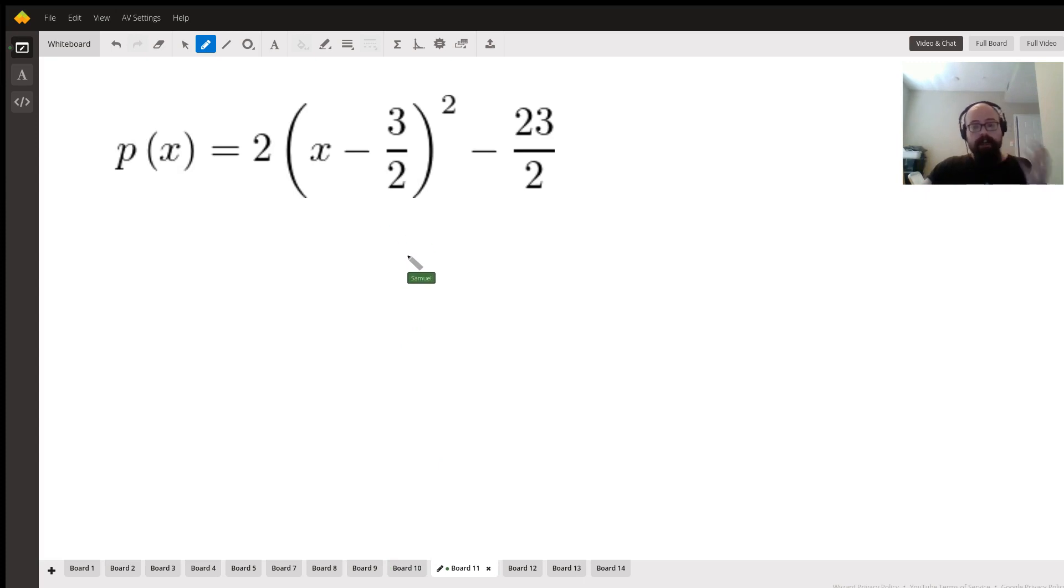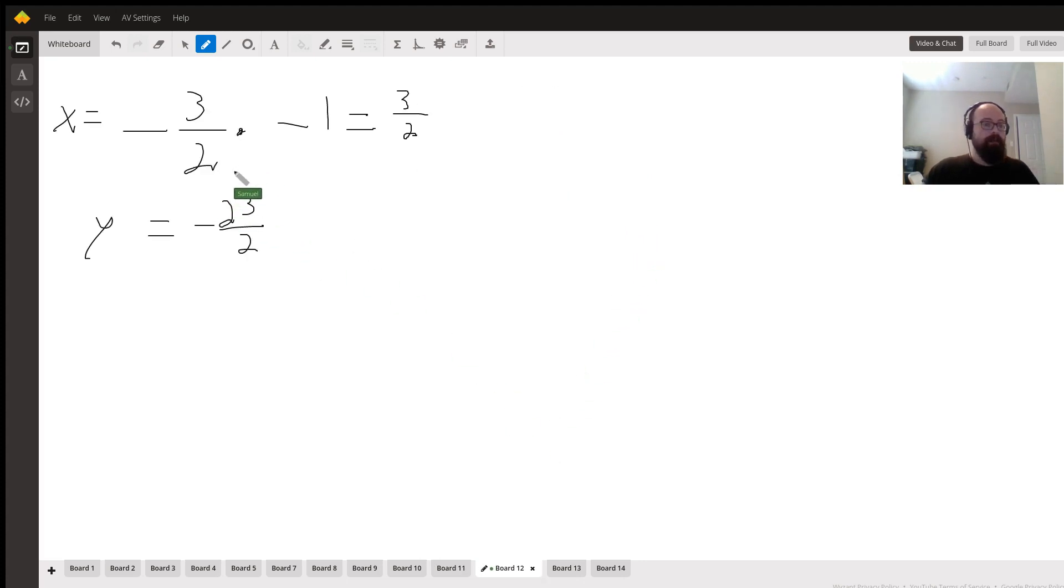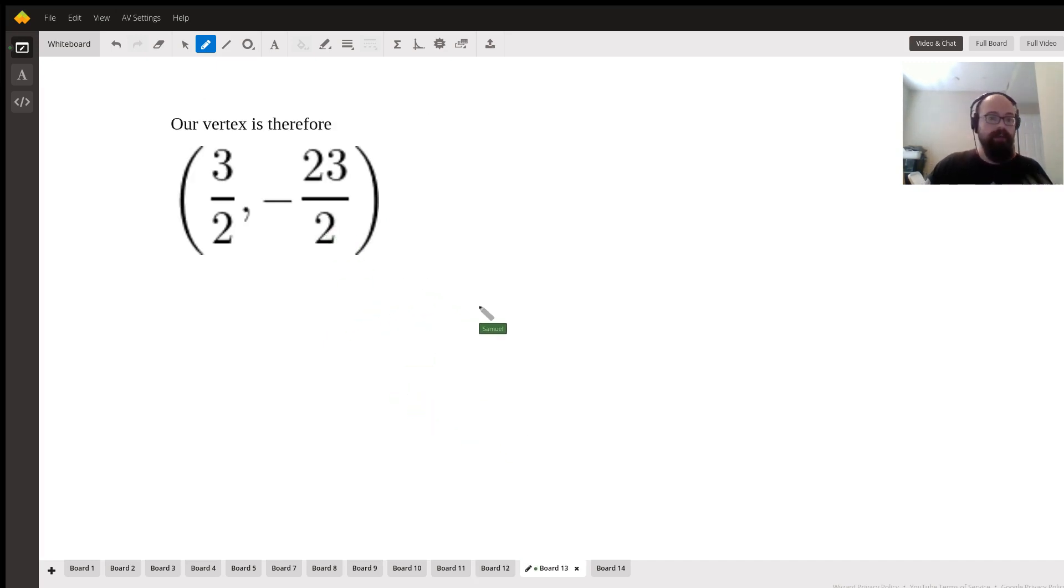So for our part B, this is actually going to be quite a bit simpler. So our x value is just going to be whatever this term here is, multiplied by -1, and then this term out here is going to be our y value. So for our x value, we take -3/2 times -1, that's going to give us 3/2, and then for our y value, that equals -23/2. So our vertex therefore is (3/2, -23/2).